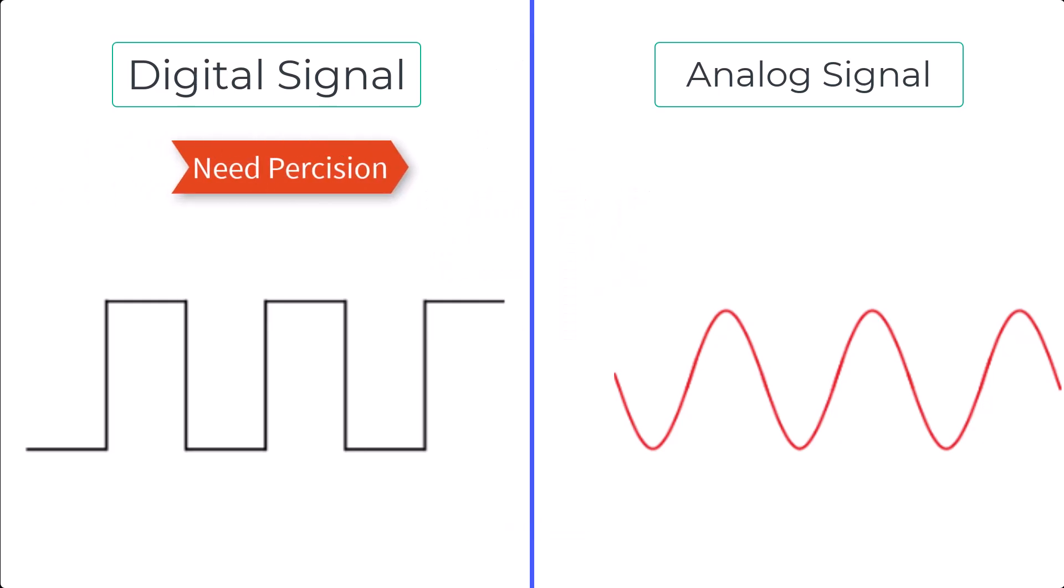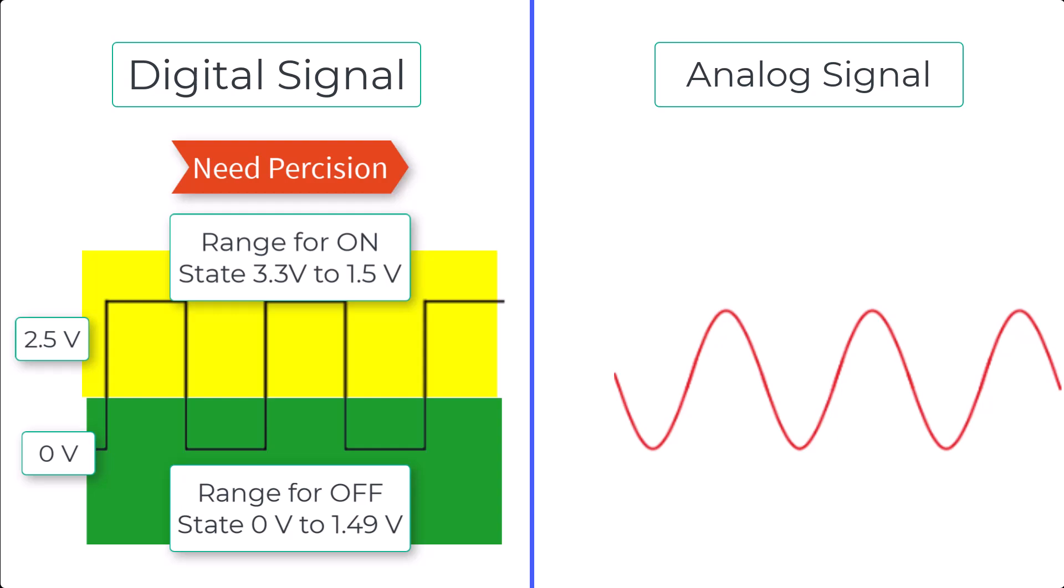Digital signals are less sensitive to changes in voltage, noise, or interference. For instance, even if the voltage source drops slightly, a digital system can still accurately determine whether the signal is on or off.